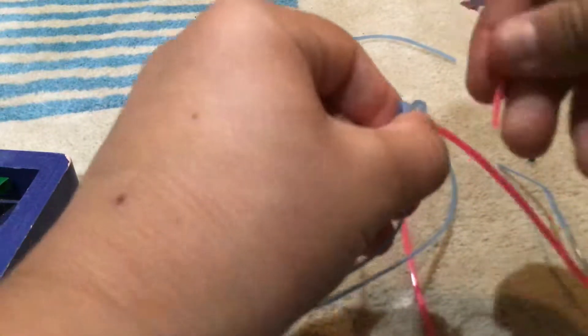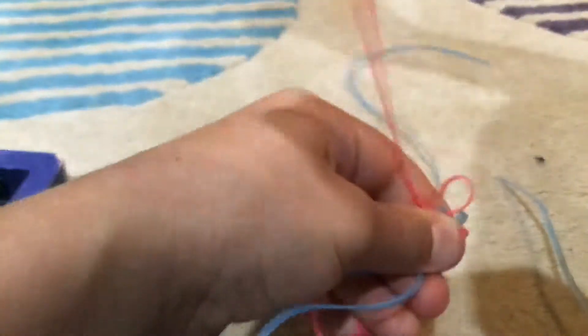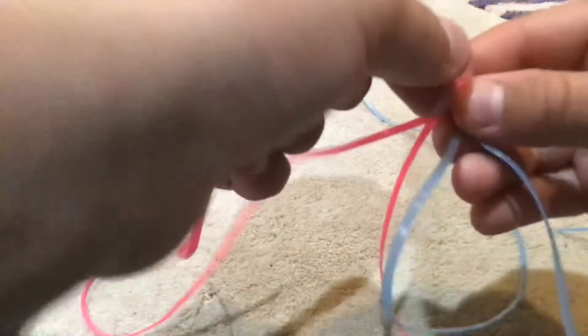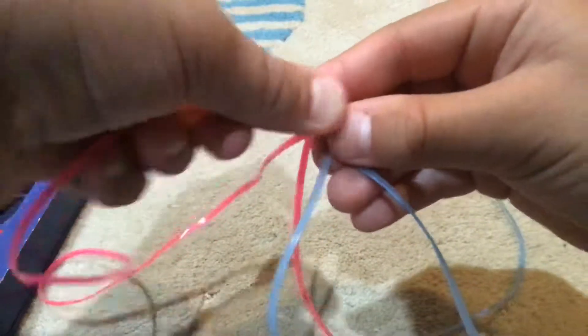Then take it like that to the very end, go over-under again and then just pull it. If it's twisted, go like that and then get the other color string, go over-under again like that.